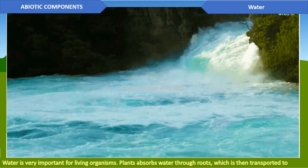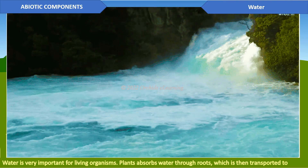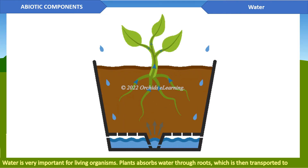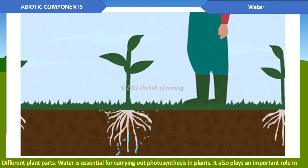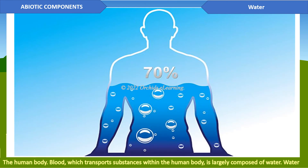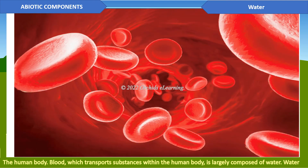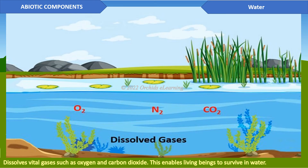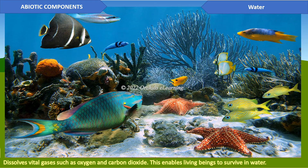Water is very important for living organisms. Plants absorb water through roots, which is then transported to different plant parts. Water is essential for carrying out photosynthesis in plants. It also plays an important role in the human body — blood, which transports substances within the human body, is largely composed of water. Water dissolves vital gases such as oxygen and carbon dioxide, enabling living beings to survive in water.